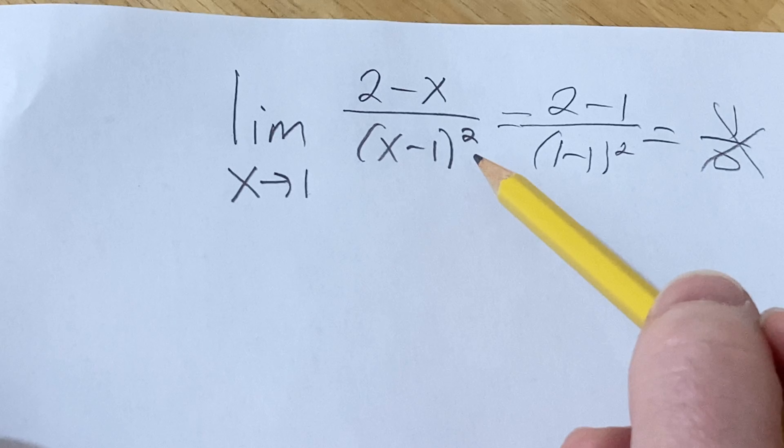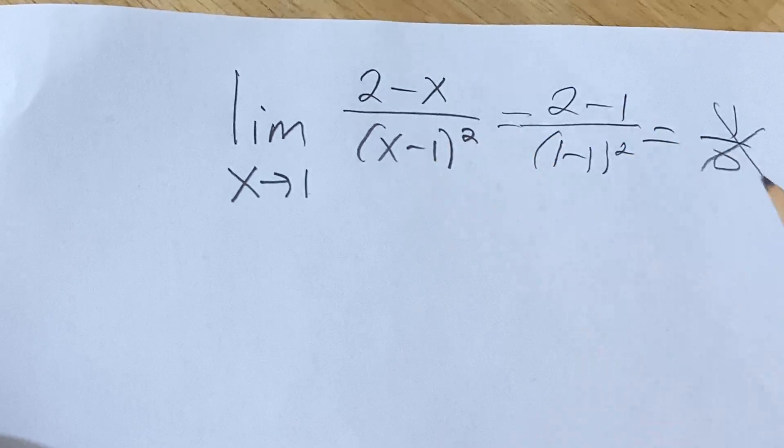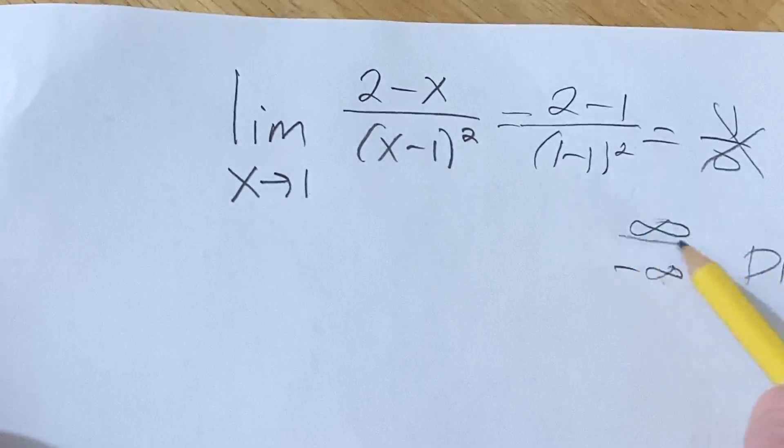So this limit is not going to exist, so the question is, what do we write? Do we write DNE, do we write infinity, or do we write negative infinity? Well, whenever you get infinity or negative infinity, the limit does not exist, except this is more descriptive than writing DNE, so we should always try to write these symbols versus this if possible.